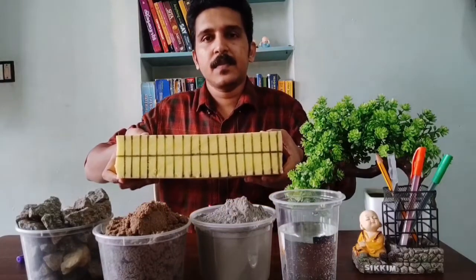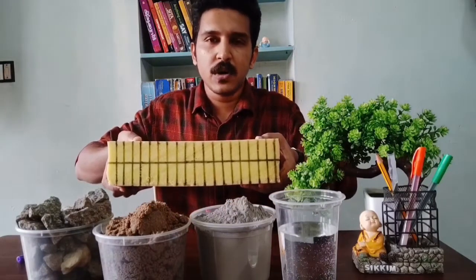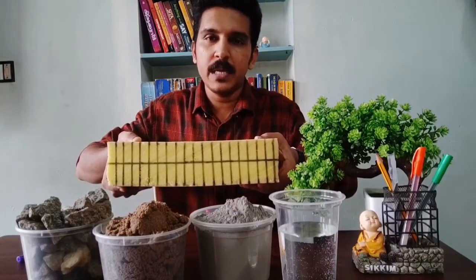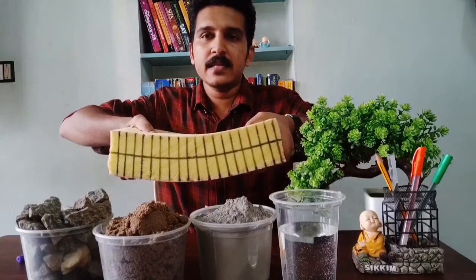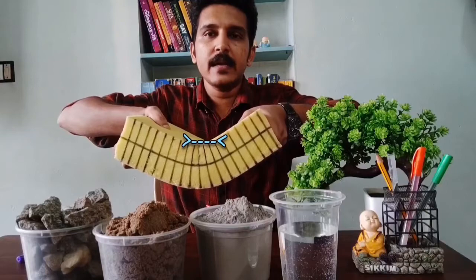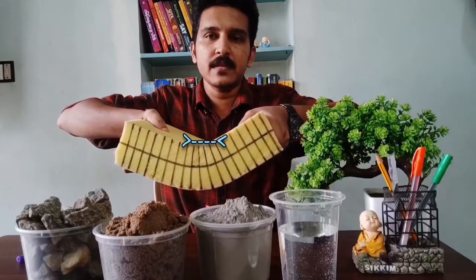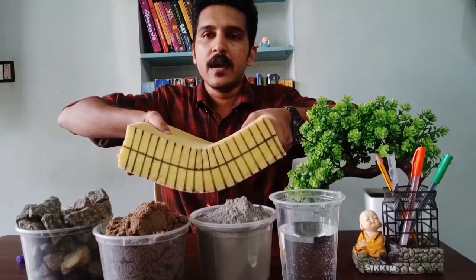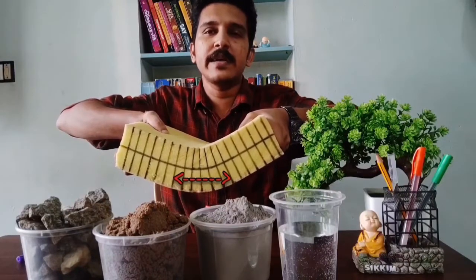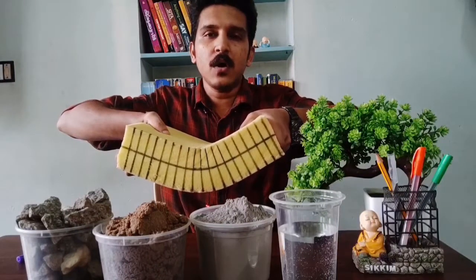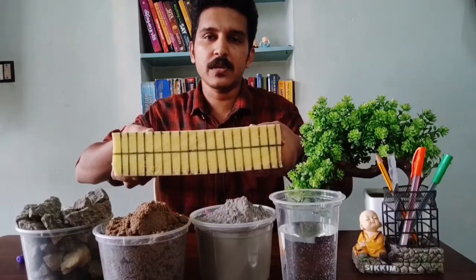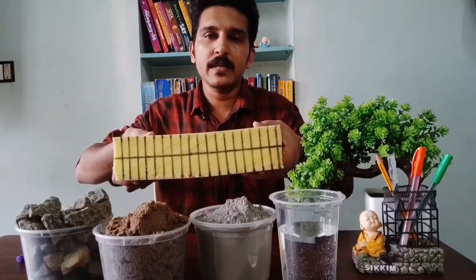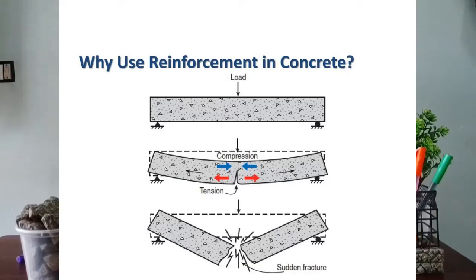If we make a beam of plain cement concrete, like this model here, and we apply a force on it, the beam deforms and bends. It bends in such a way that the top portion experiences compression and the bottom portion experiences tension. We know concrete is weak in tension but strong in compression, so after a particular load, the PCC beam fails.